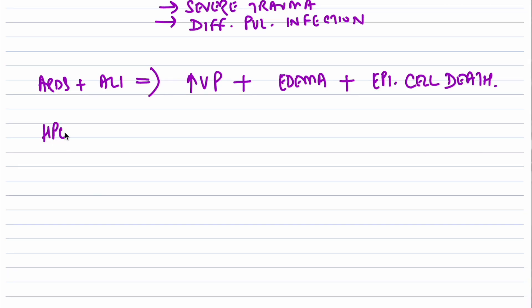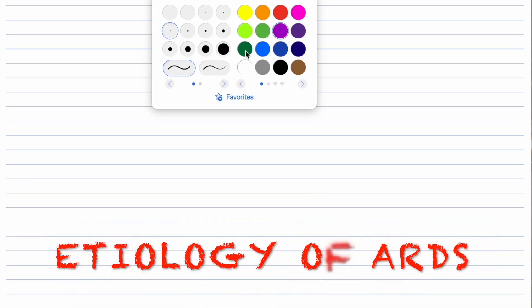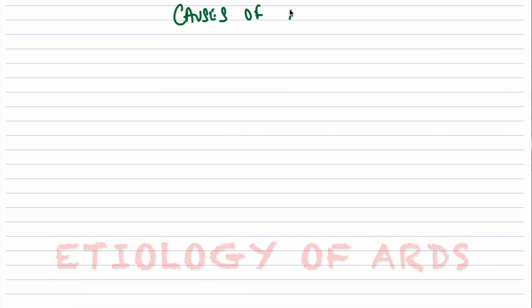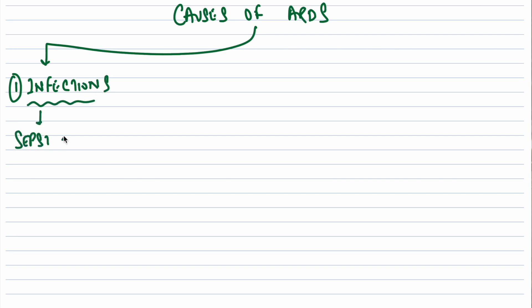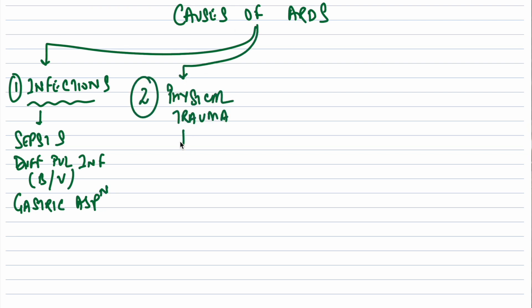Both ARDS and ALI are associated with increased pulmonary vascular permeability, edema, and epithelial cell death. The major histological manifestation of ARDS or ALI is diffuse alveolar damage. The causes of ARDS are very similar to the causes of non-cardiogenic pulmonary edema.